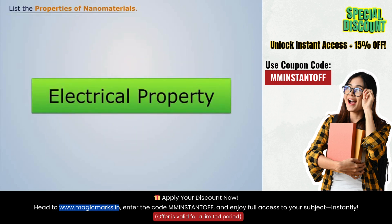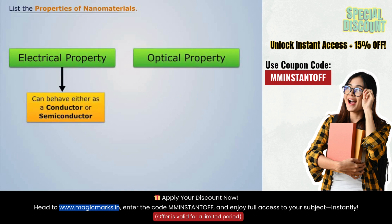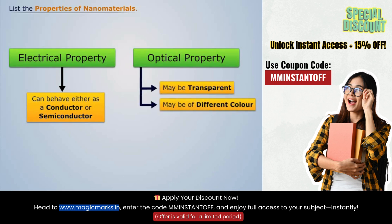Let us now list the electrical properties and optical properties. Nanomaterials can behave either as a conductor or semi-conductor. Nanomaterials may be transparent and may be of different colors compared to their corresponding material in bulk.